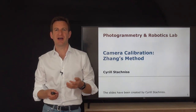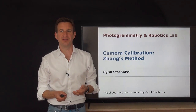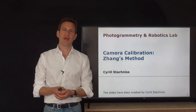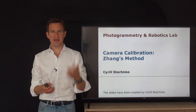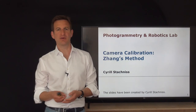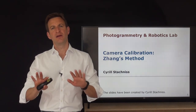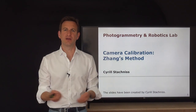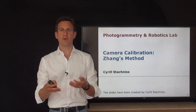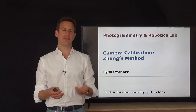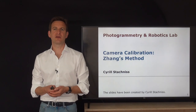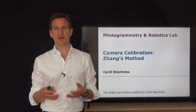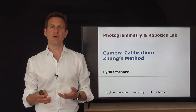Welcome to the course today. I want to introduce a technique for camera calibration. That means we want to estimate the intrinsic parameters — the calibration matrix of our camera — not taking into account where the camera is. In contrast to DLT, where we were estimating the intrinsics and the extrinsics at the same point in time, here we are trying to estimate only the intrinsics.